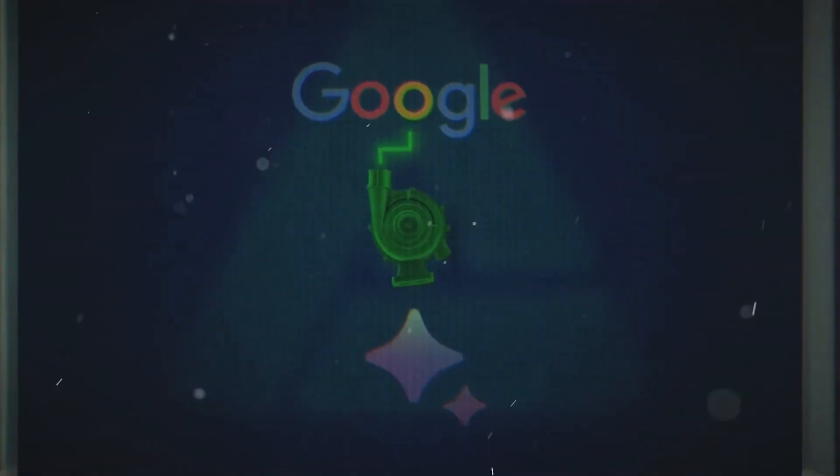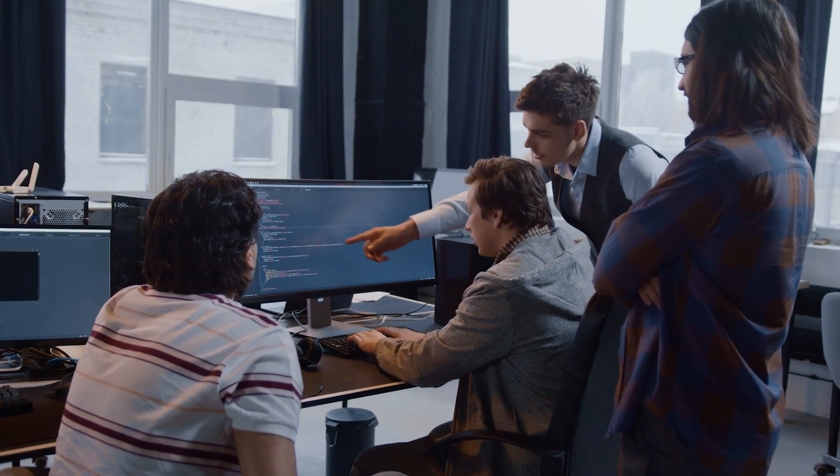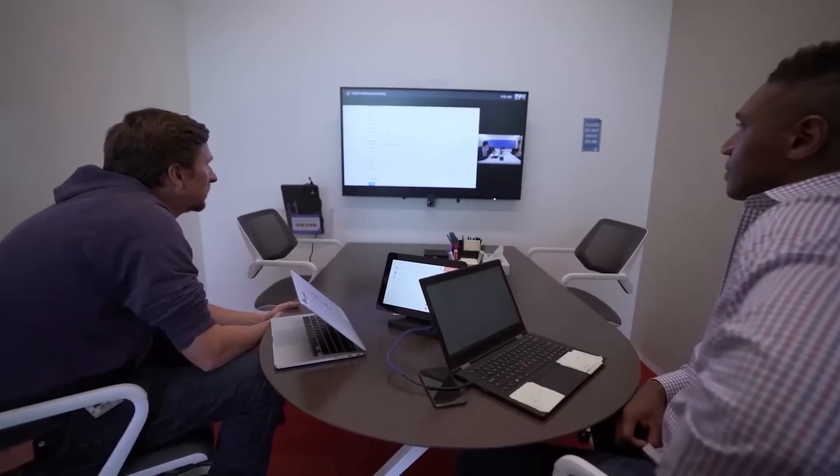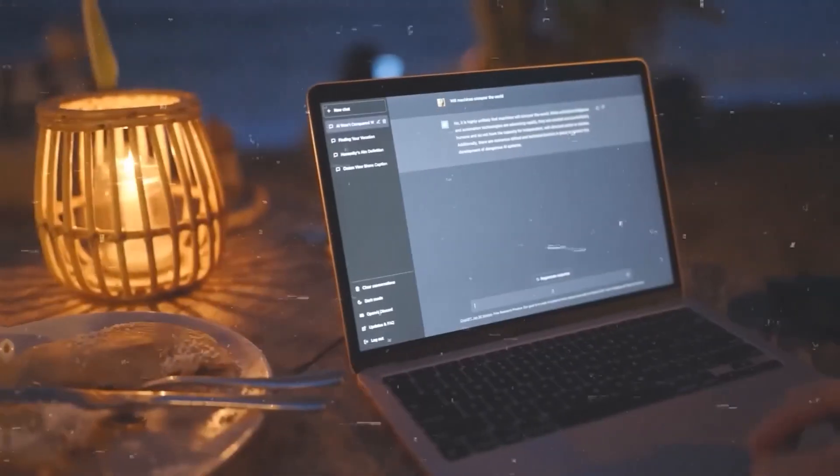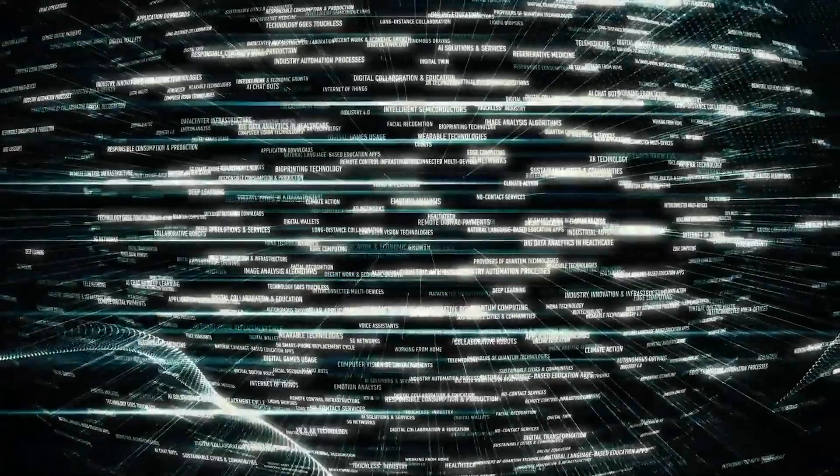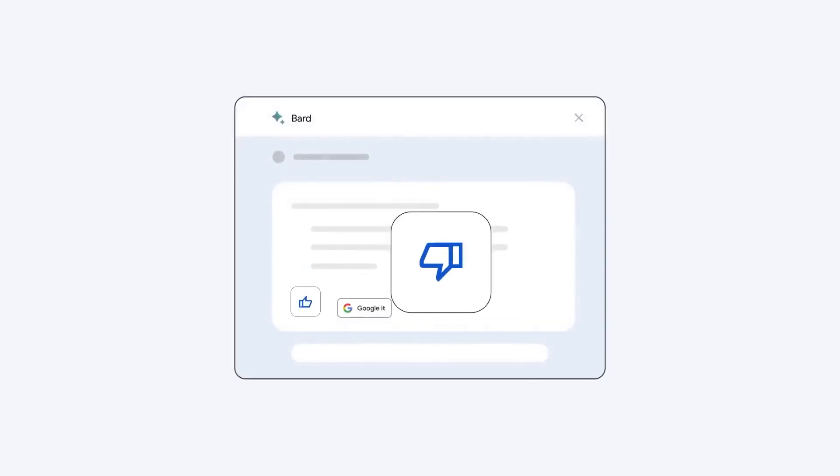Feature-wise, Bard typically represents multiple responses to queries citing sources for credibility. This ensures users get a holistic view of a topic. It's tailored to adapt and respond to different user needs. ChatGPT offers a more direct experience delivering singular, concise responses. While it doesn't always reveal its sources, its answers are well-founded. Users can opt for the standard version or upgrade to ChatGPT Plus for added benefits.